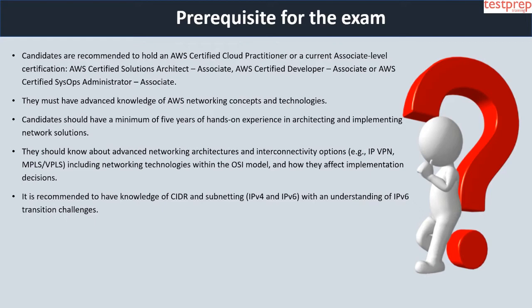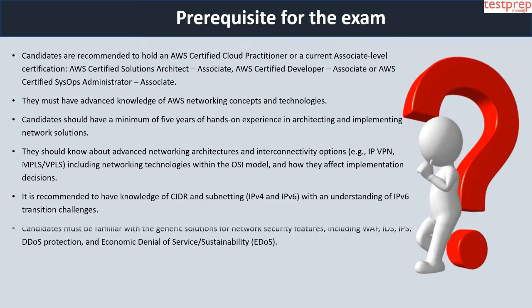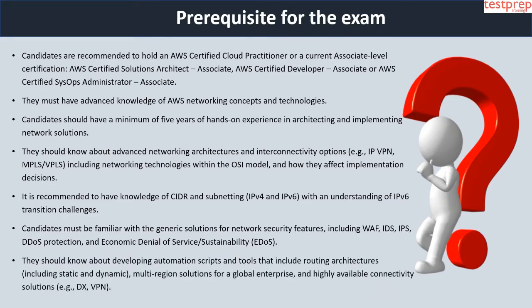Fifth, it is recommended to have knowledge of CIDR and subnetting, IPv4 and IPv6, with an understanding of IPv6 transition challenges. Sixth, candidates must be familiar with generic solutions for network security features including WAF, IDS, IPS, DDoS protection, and denial of service sustainability. Seventh, they should know about developing automation scripts and tools, routing architectures including static and dynamic multi-region solutions for a global enterprise, and highly available connectivity solutions, for example DX and VPN.